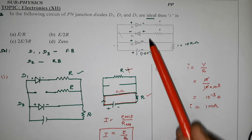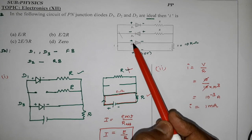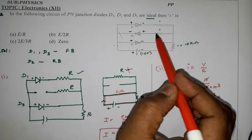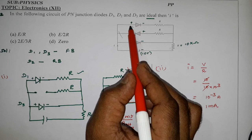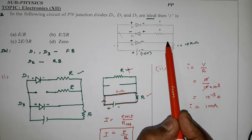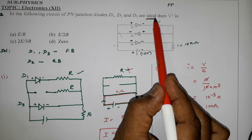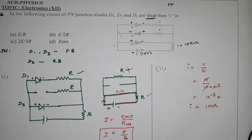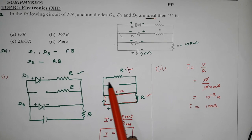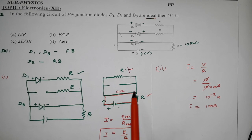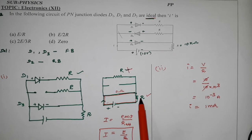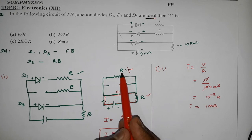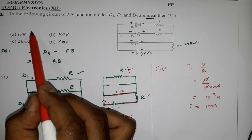In this 3-diode circuit: D1 is forward bias, D3 is forward bias, D2 is reverse bias — so we cut that line. There are resistors connected. The ideal diode potential drop is 0. In this circuit we simplify and use the current flow. This is 0 ohm resistance, so the easiest path is chosen. The net resistance value is R. So the answer is option A.